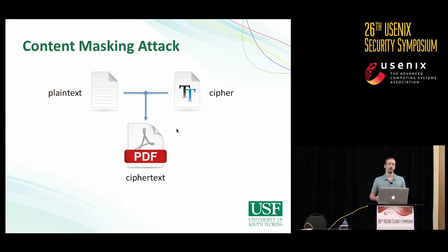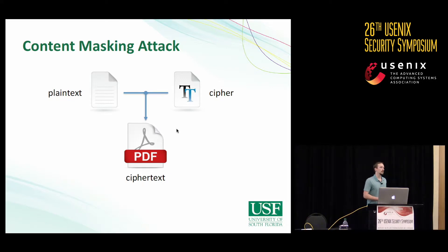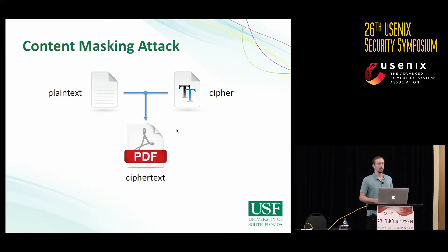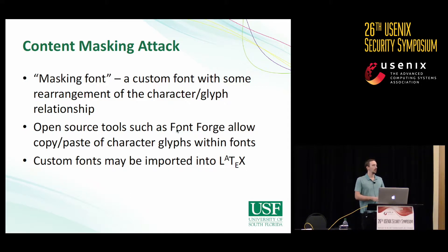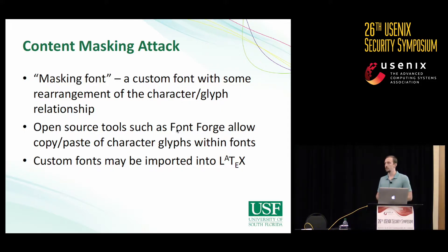Our attack works within the disconnect between the underlying text and the rendered text. You can think of it like an encoding mechanism where the font applies a cipher to the plain text to make a cipher text that is rendered. Our attack changes the plain text while leaving that cipher text understandable by human readers. We accomplish that by changing the font files — we alter the relationship between letters and their glyphs so the content displayed differs from the underlying content. Open source tools like FontForge let you copy and paste a character glyph from one letter to another, and custom fonts can be imported into LaTeX or Word to generate your PDF.